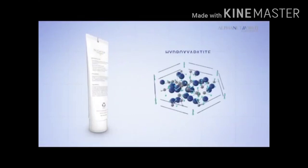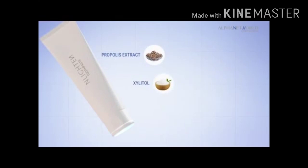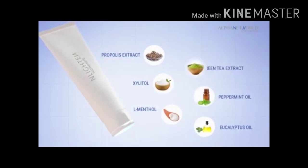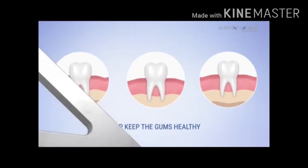Enlighten Toothpaste contains hydroxyapatite that helps clean and whiten the teeth by remineralizing and filling the micro cracks of the enamel. Propolis extract, xylitol, L-menthol, eucalyptus oil, peppermint oil, green tea extract and eucalyptus extract help inhibit the growth of bacteria to help prevent cavities and tooth decay and help keep the gums healthy.